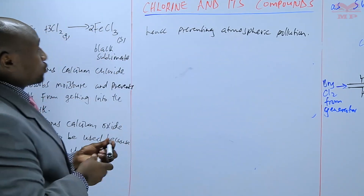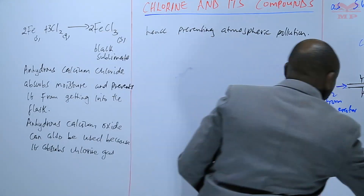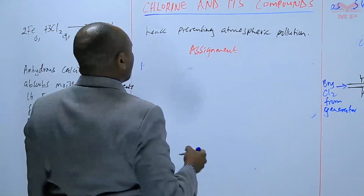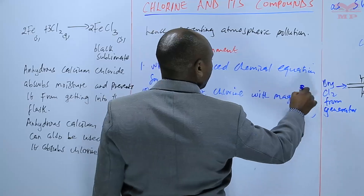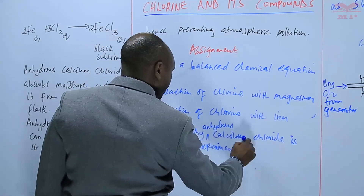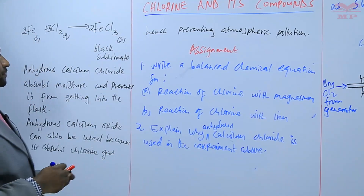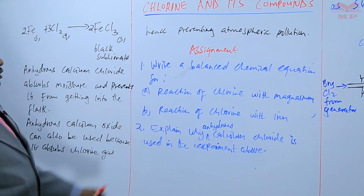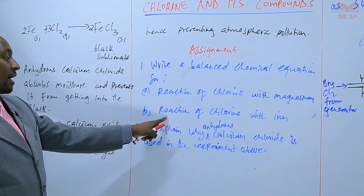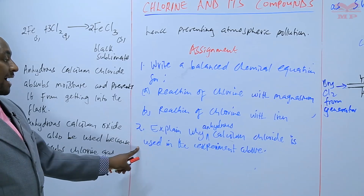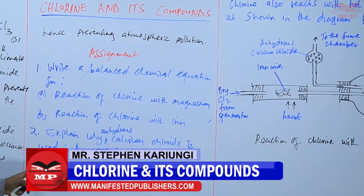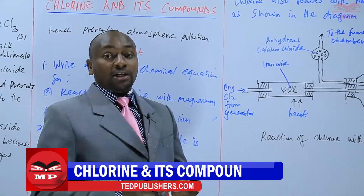We are going to have an assignment. Question one: write a balanced chemical equation for (a) the reaction of chlorine with magnesium, and (b) the reaction of chlorine with iron. Question two: explain why anhydrous calcium chloride is used in the experiment above. We'll stop there and continue next time. Goodbye.